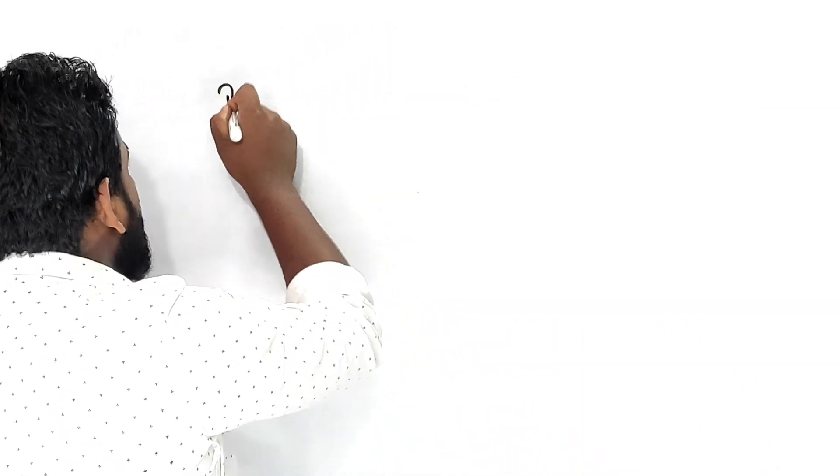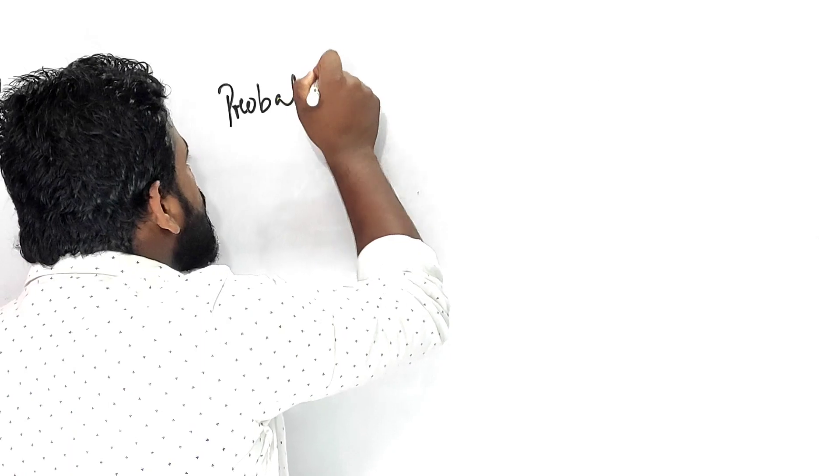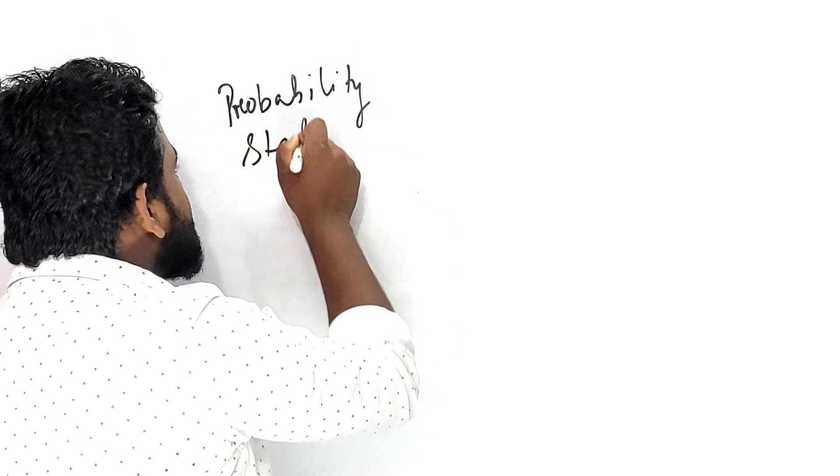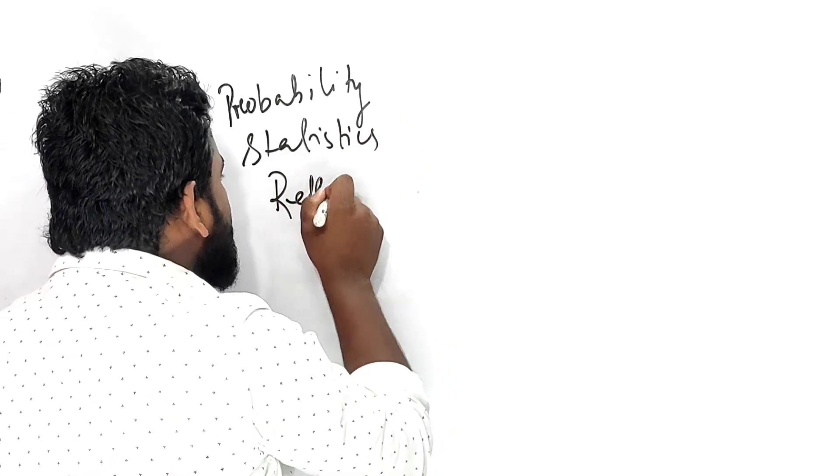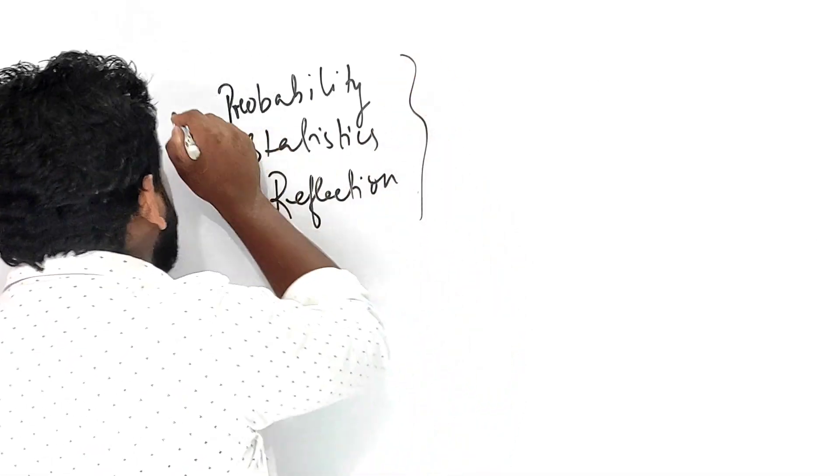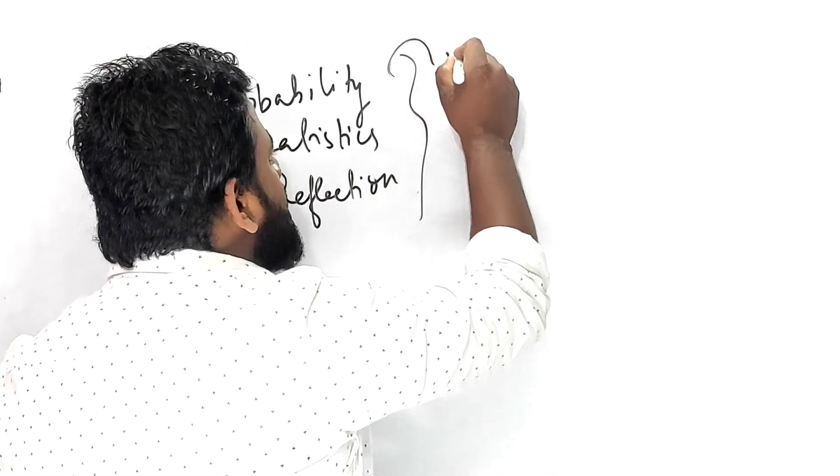First, you have to understand which chapter you find easy. Personally, I think everyone finds Probability is a chapter that is very easy. Not only Probability but also Statistics — many find those chapters very easy. And not only Statistics but also one important chapter: Reflection. The top three chapters I want to keep on the list are Probability, Statistics, and Reflection. If you are thorough about these topics, I may say 15 marks are reserved for you.